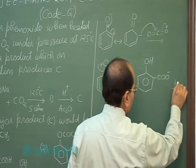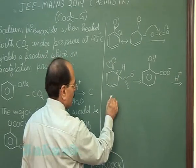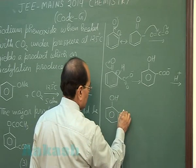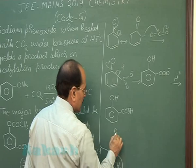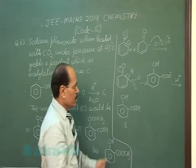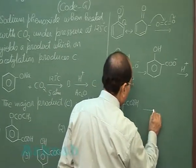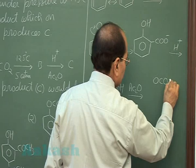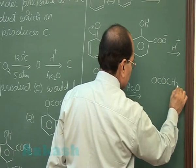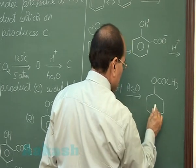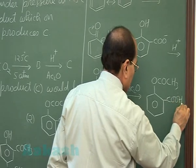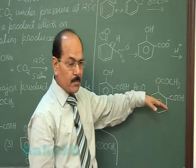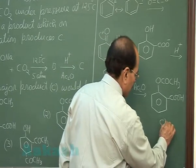The phenoxide ion accepts the proton to give salicylic acid, which is product B. This product B then reacts with acetic anhydride to give orthoacetoxybenzoic acid, which is product C.